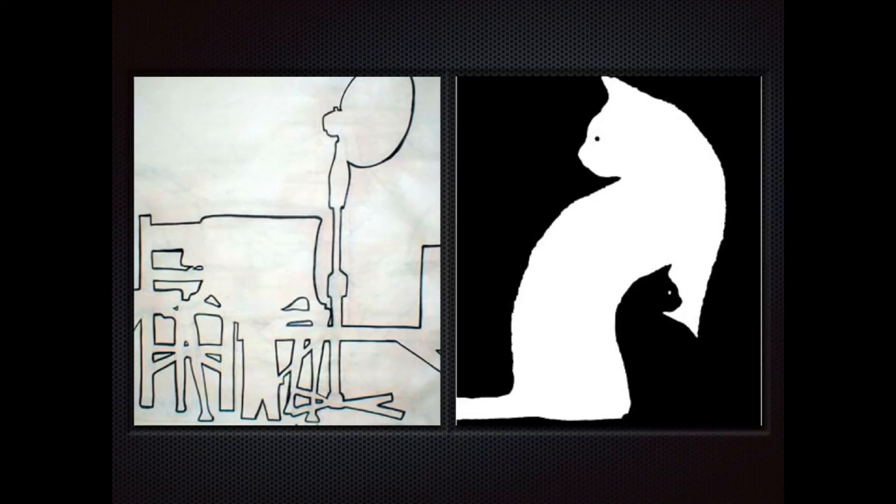Here are a couple other examples of negative space drawing. On the left-hand side, you can see what looks like a fan, table, and chairs, and the only shapes that are outlined are the negative spaces. On the other side, however, there is a push and pull of negative versus positive space.